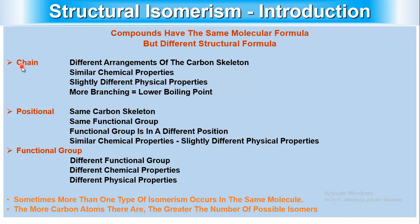In chain isomers, there is a different arrangement of the carbon skeleton. They have similar chemical properties but slightly different physical properties. Greater branching leads to a lower boiling point.